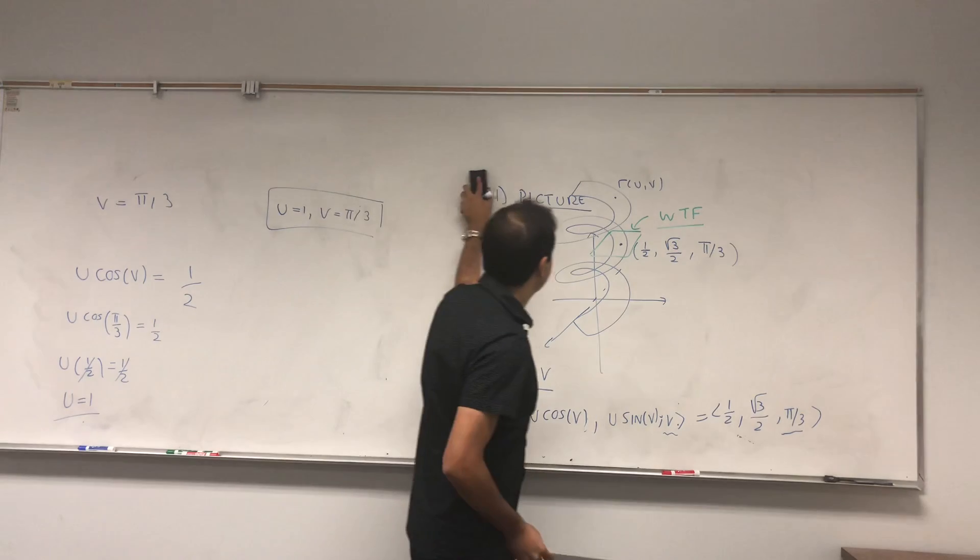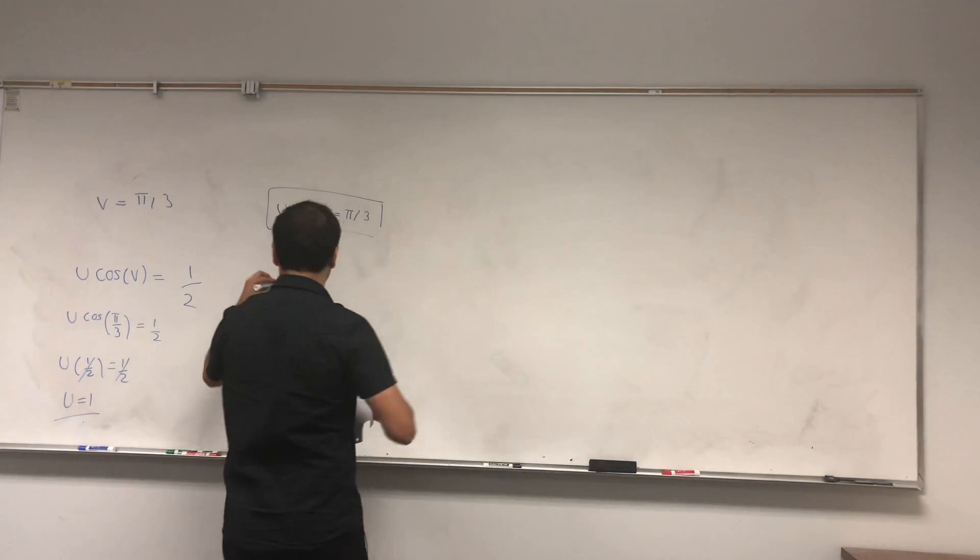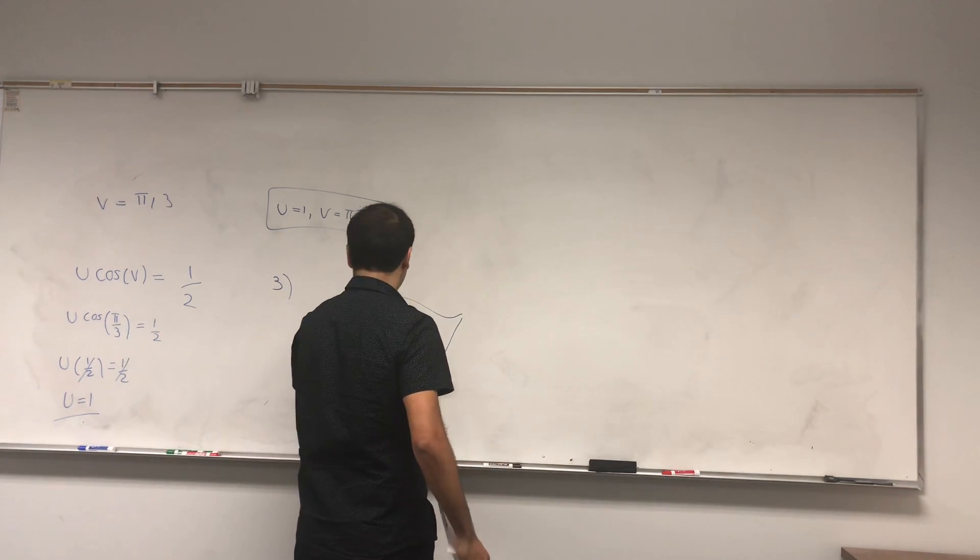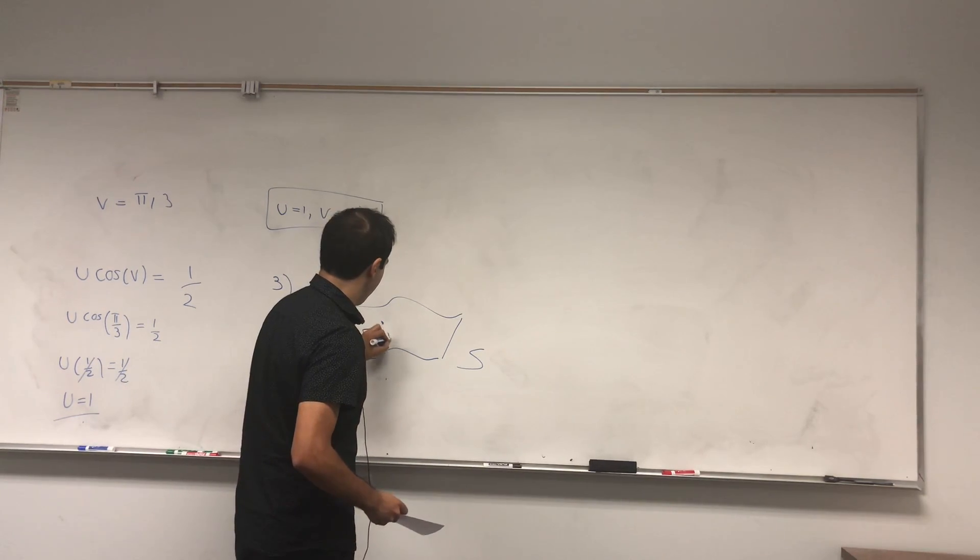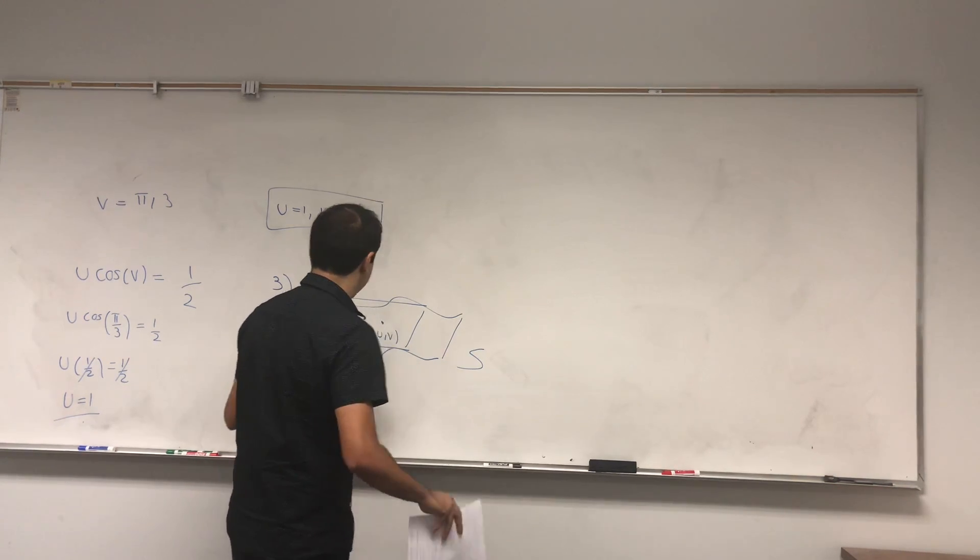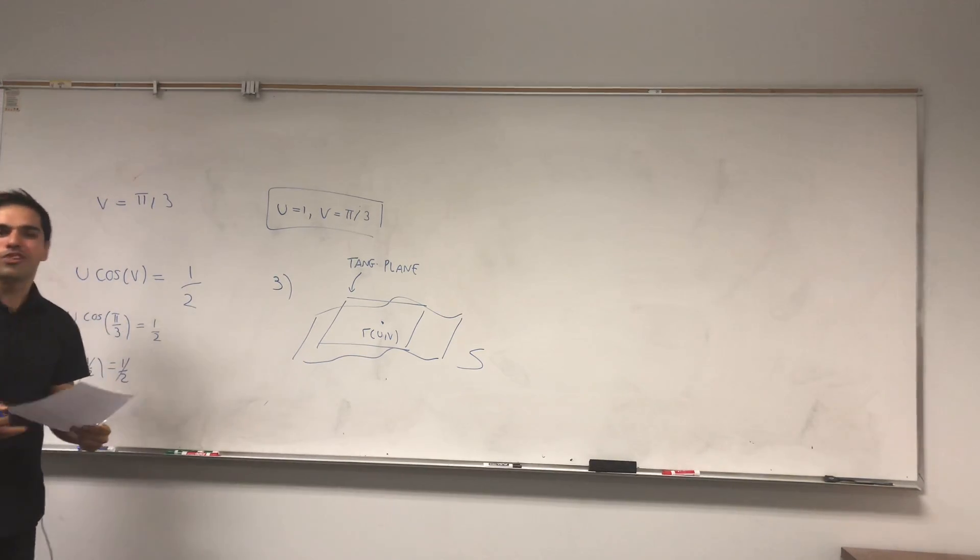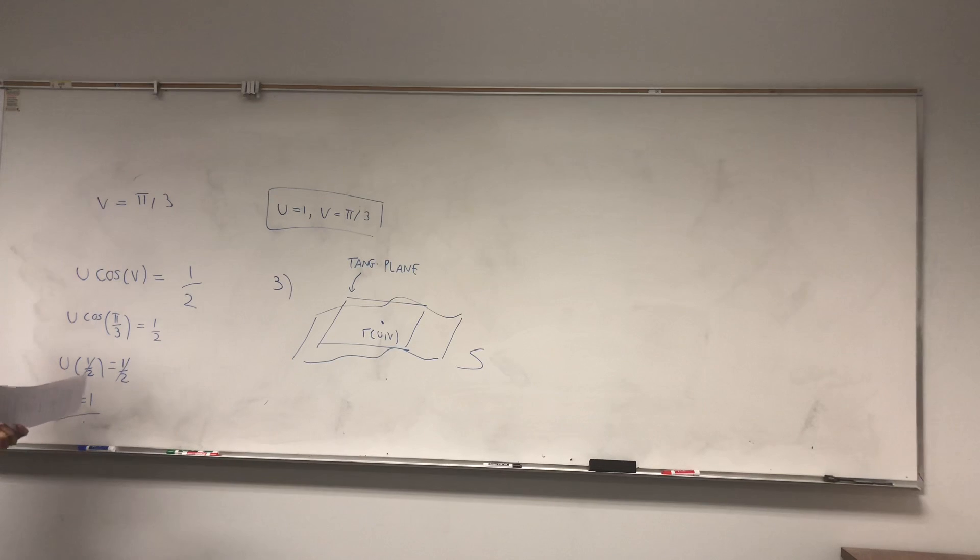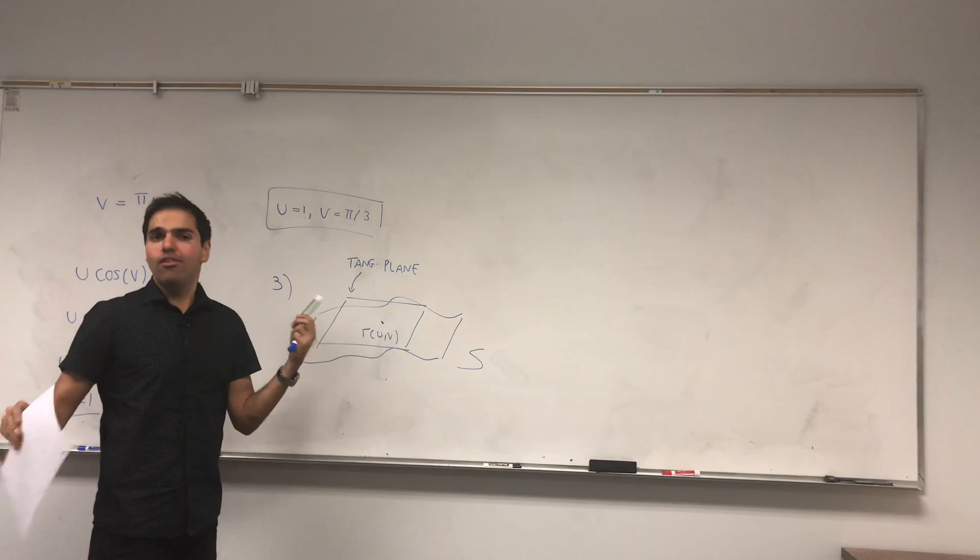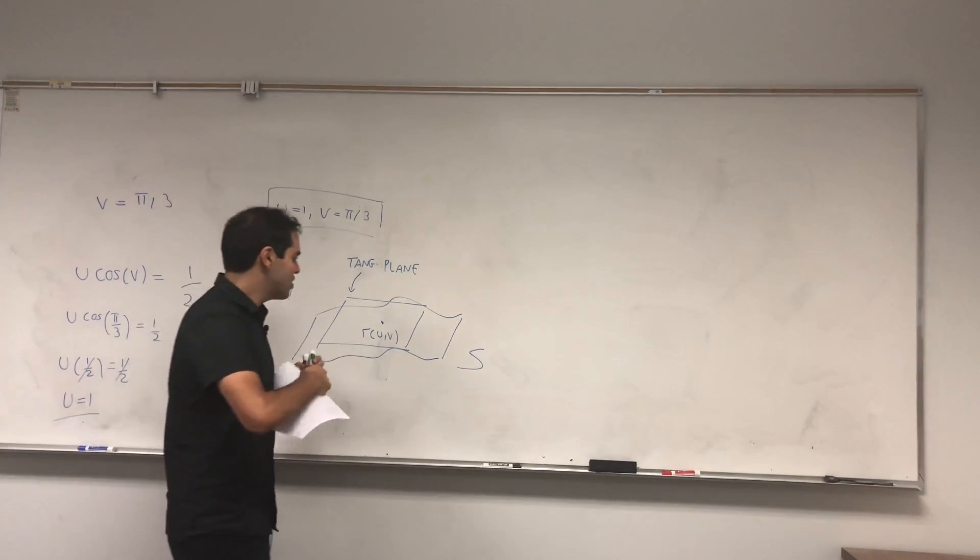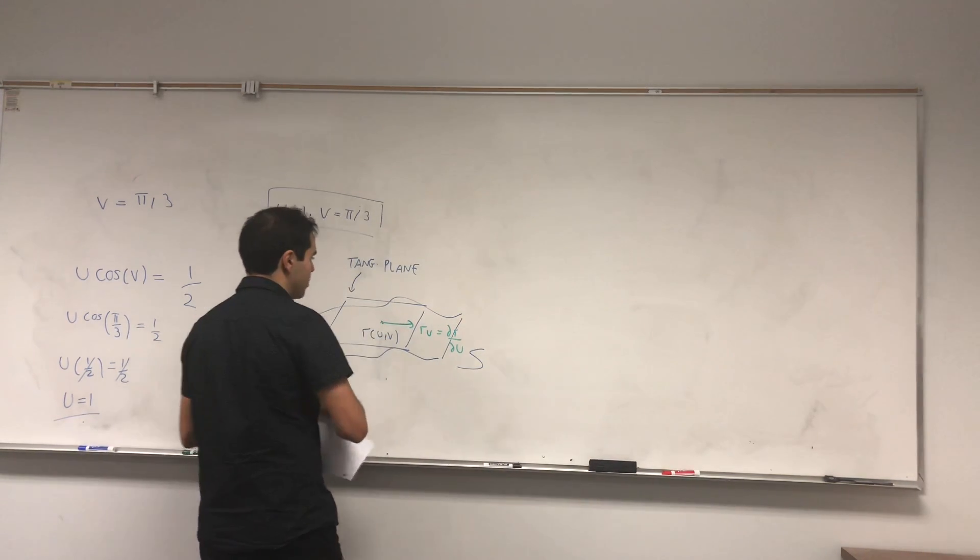Now, the question is, how do we find the tangent plane? And now, suppose you have a surface like that. I know, magic carpet. Think of it as a magic carpet. And suppose you have a point, R(u,v). And you have the tangent plane. So, this is the tangent plane. Like in our example, R(u,v) was one-half square root of three over two pi over three. It turns out there are two vectors that are guaranteed to be in the tangent plane. Namely, the slopes of r. And there are basically two slopes here, which is Ru, so partial r over partial u, and Rv, which is partial r over partial v.